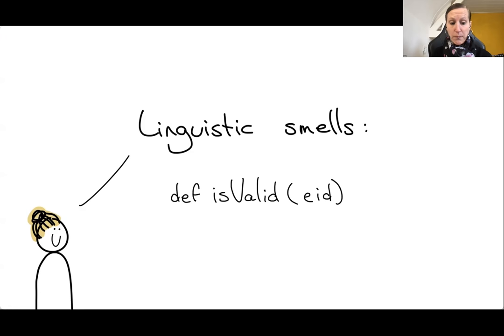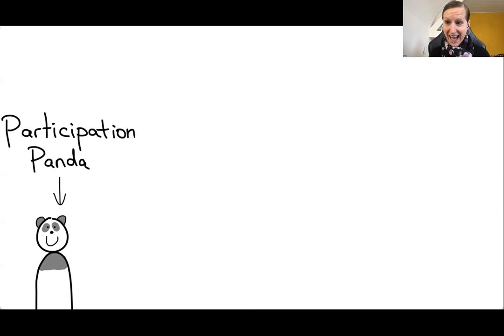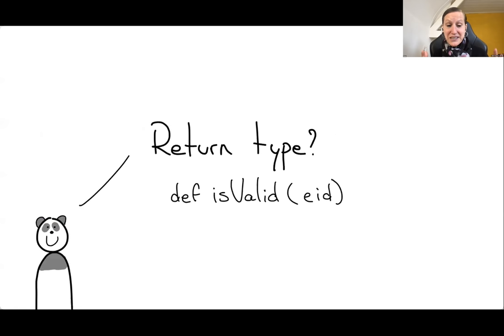So they're like code smells in the sense that they're just not perfect, but they talk about names rather than about structure. For example, imagine you have a function or method that's called isValid. And it takes some sort of external ID. And the method is going to check, is this a valid ID? Question. I brought my friend the participation panda. If we have the participation panda on screen, it means you, audience, have to do something. So question for you. If you see a method like this, isValid, what do you think the return type might be?